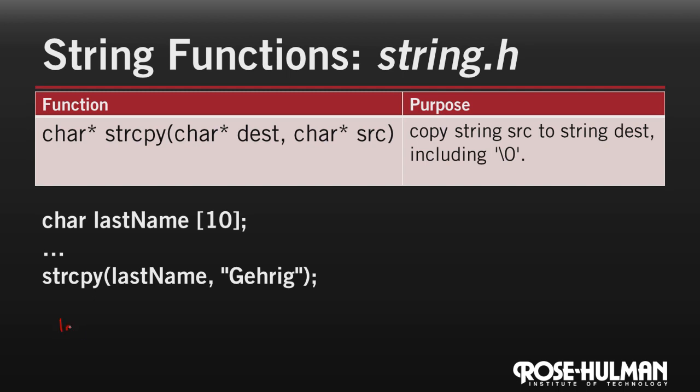Let's take a look at a box and pointer diagram for this. So we have last name as a pointer, initially, to some empty space, 5, 6, 7, 8, 9, 10. And then, that's on the stack. And up in code space, we have Gehrig, which is a string literal. G-E-H-R-I-G backslash 0. By calling string copy, what we're doing is asking it to copy character by character, everything, down into last name, including the null character. And now that it's in the stack, we can modify it however we like later on in the program.